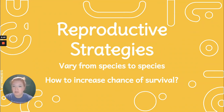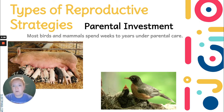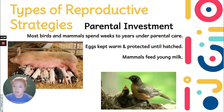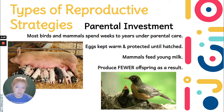Reproductive strategies also vary from species to species, and the focus here is how can we increase the chance of survival? There's parental investment — most birds and mammals spend weeks to years under parental care. Eggs are kept warm and protected until they hatch, and birds will continue to feed their young after hatching; mammals feed their young milk. As a result of parental investment, they produce far fewer offspring — there can be hundreds of thousands of fish eggs, but that is simply not practical for an animal that exhibits a lot of parental investment.